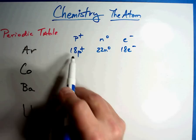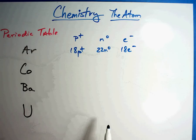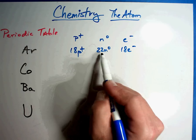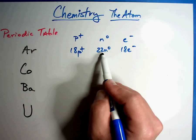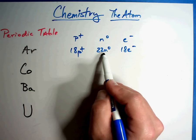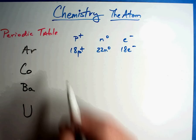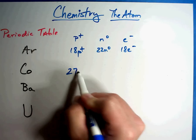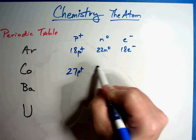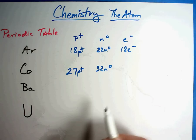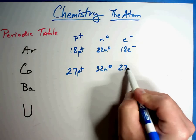Remember, protons and electrons equal each other because they're supposed to come out to zero. There's more neutrons this time. It really doesn't matter. Remember, you only get extra mass from your neutrons. Cobalt was the next one, 27 protons, 32 neutrons, and 27 electrons.